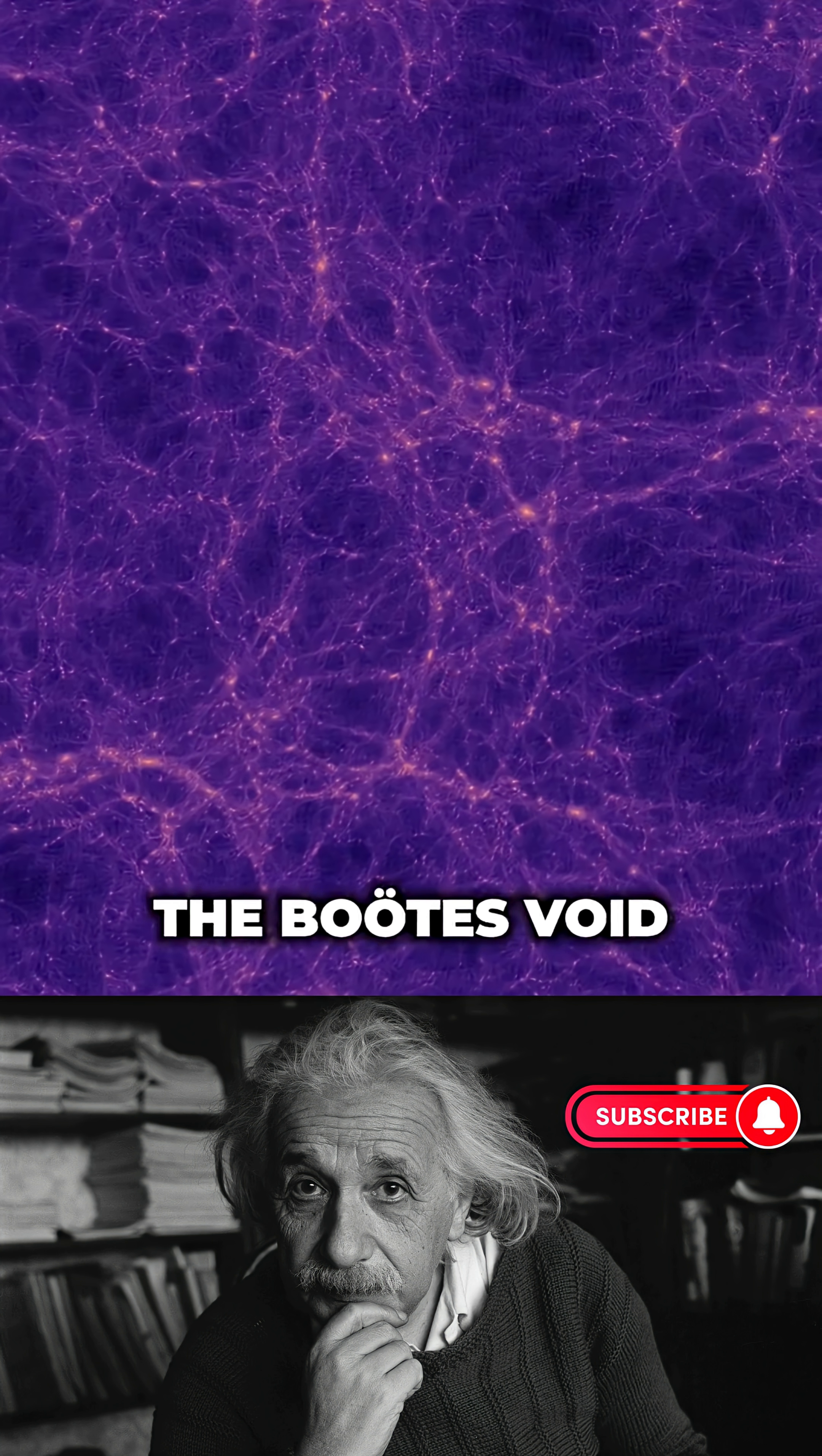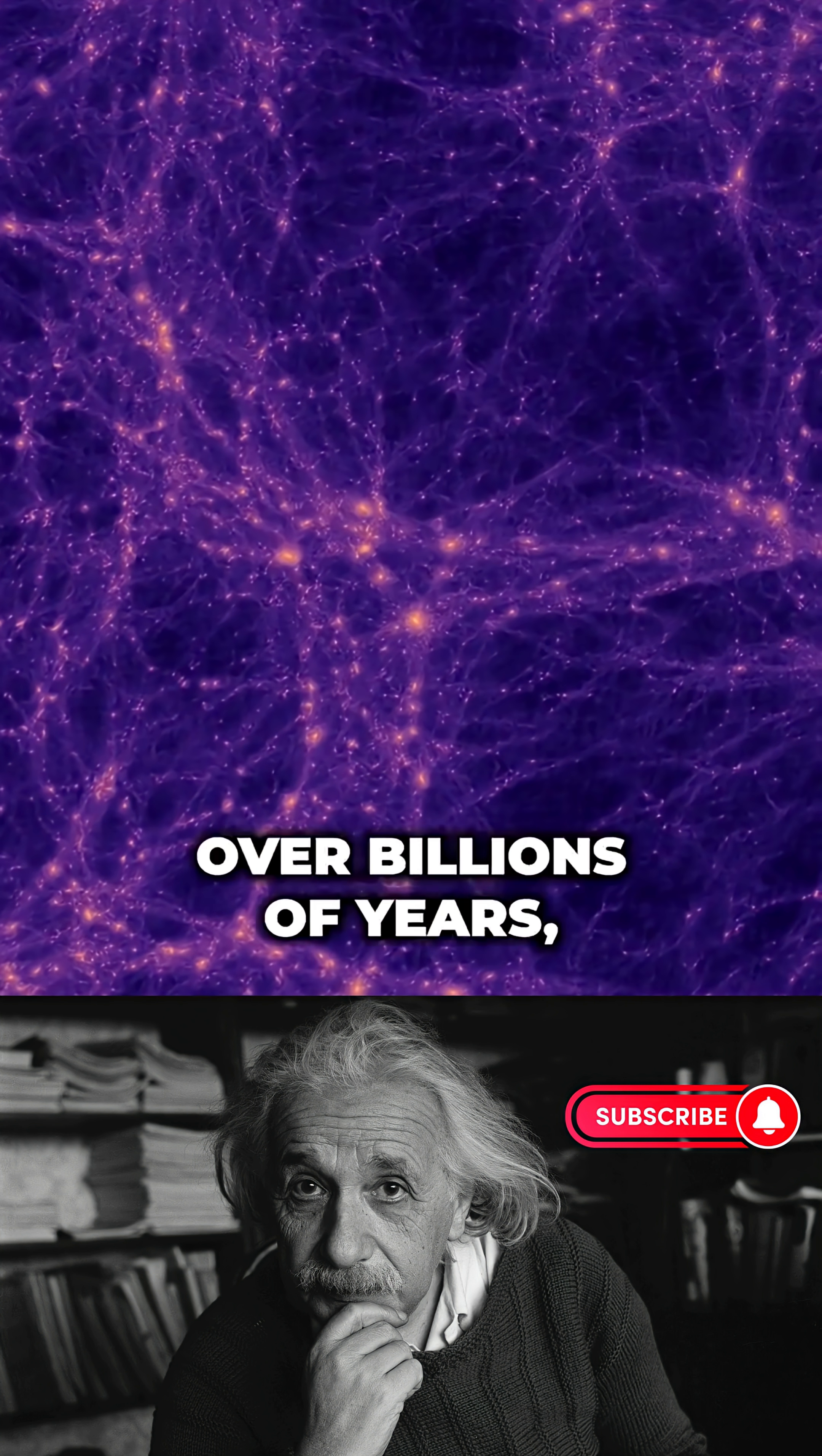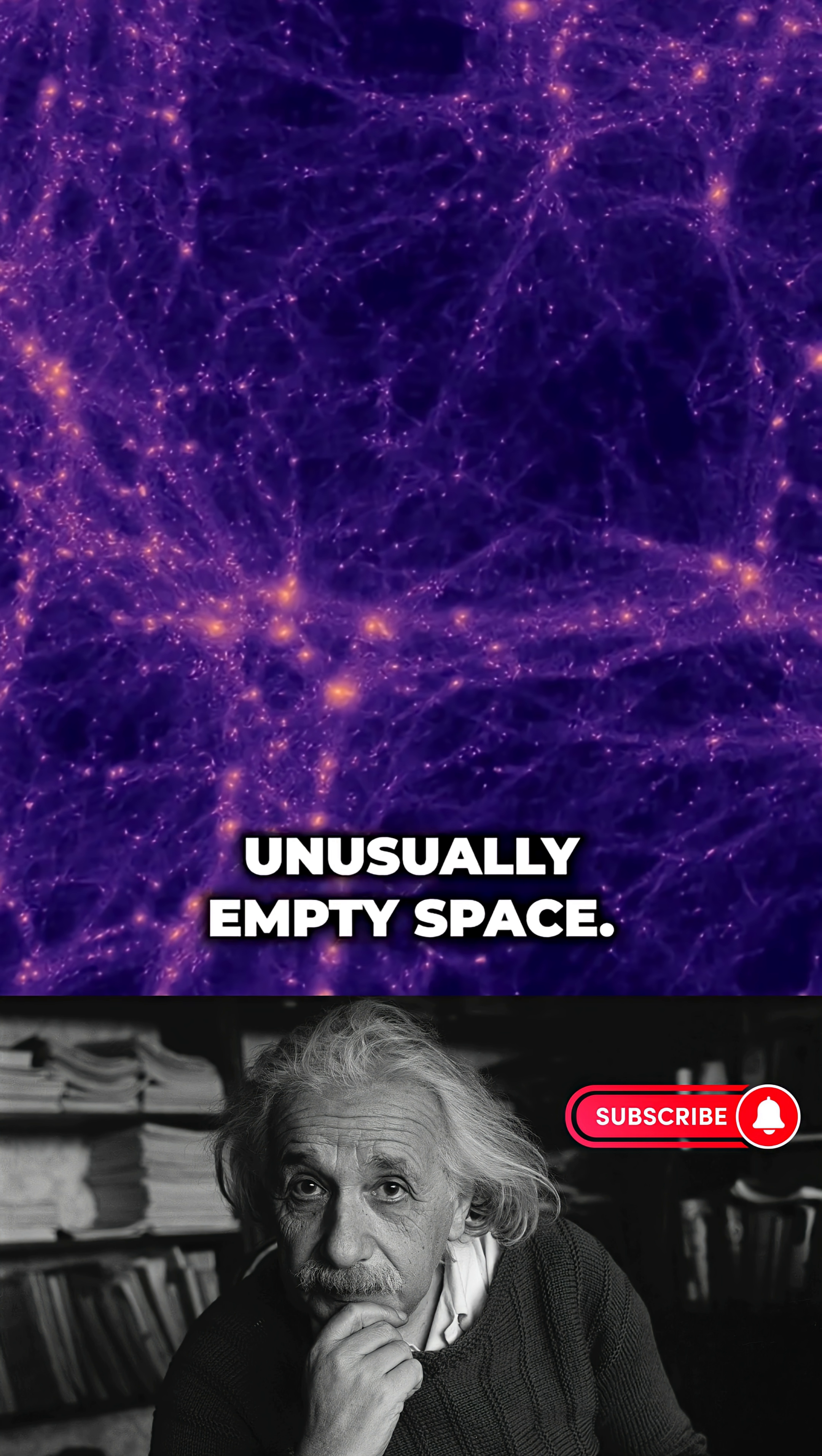However, the Bootes Void likely formed from regions of space with less dark matter where fewer galaxies could form, leaving it largely empty. Over billions of years, smaller voids may have merged to create one massive, unusually empty space.